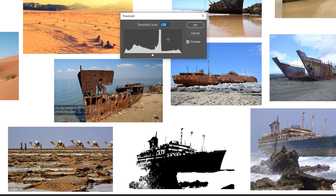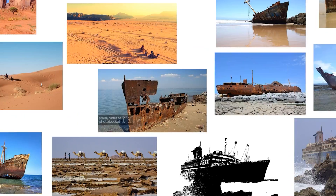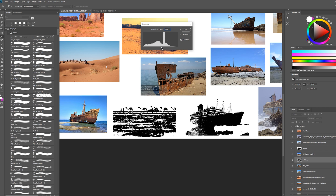This goes for everything — I look for interesting ground textures, mountains, vegetation, but mostly I look for my keywords. Since my three keywords are shipwreck, desert, and caravan, I need at least three different silhouettes I can work with to adjust and place in a nice composition.